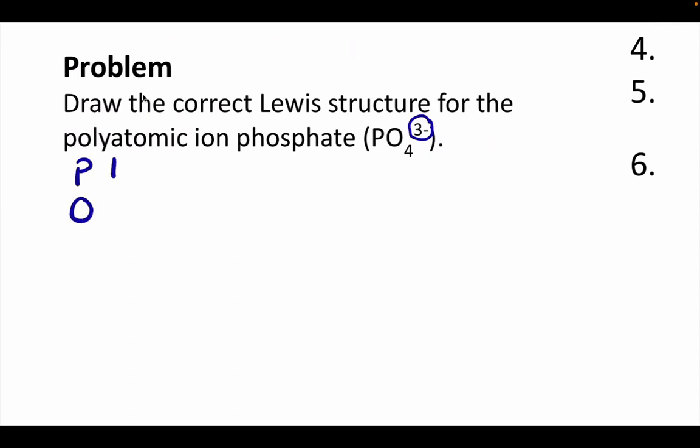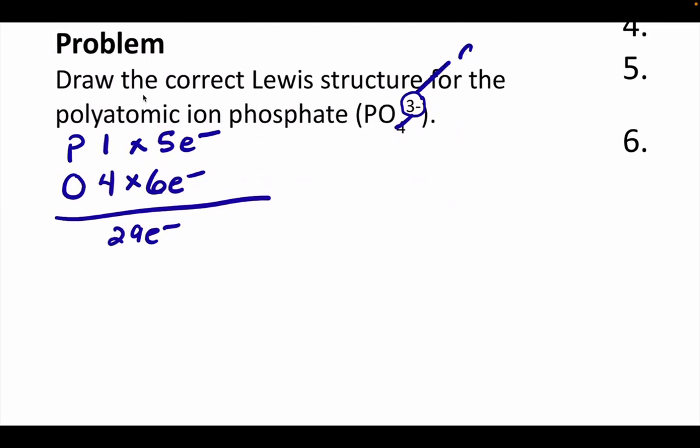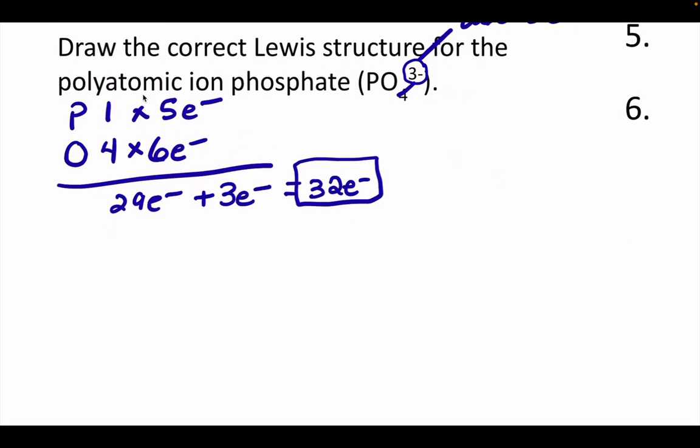Let's calculate our cache first. There's 1 phosphorus, 4 oxygens. That would give me 29 electrons. The charge, if it's negative, that means I'm going to add 3 electrons. So I have a total of 32 electrons as my cache. That was the one new thing. I add the electrons if it's negative, and I take away if it's positive.